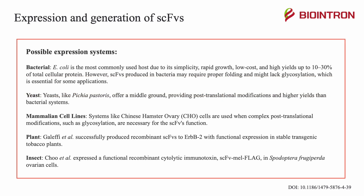Single-chain variable fragments have several possible expression systems. One of the major systems is bacterial — for example, E. coli, which is the most commonly used host due to its simplicity, rapid growth, low cost, and high yields of up to 10–30% of total cellular protein. However, SCFVs produced this way may require proper folding and might lack glycosylation, which is essential for some applications.